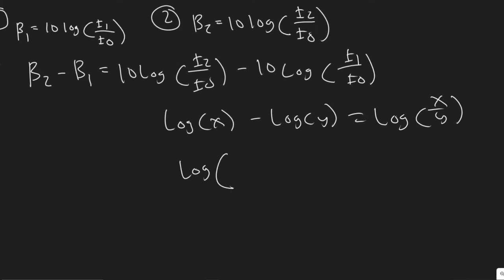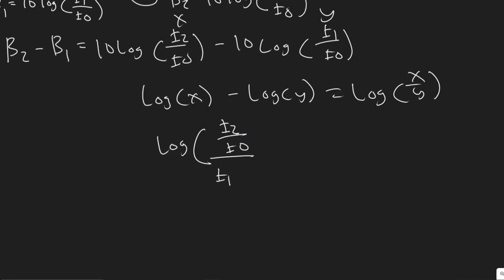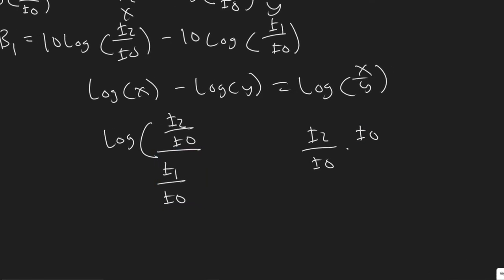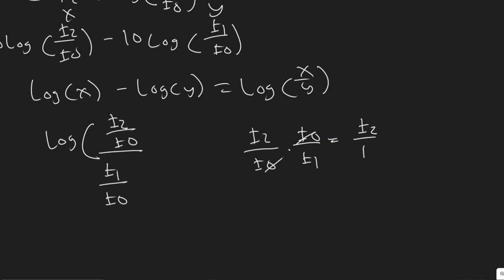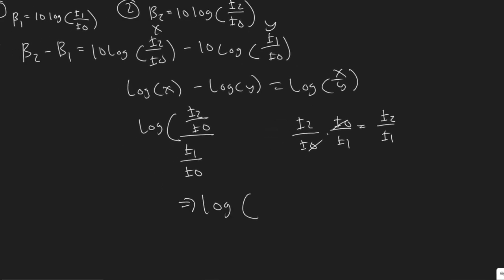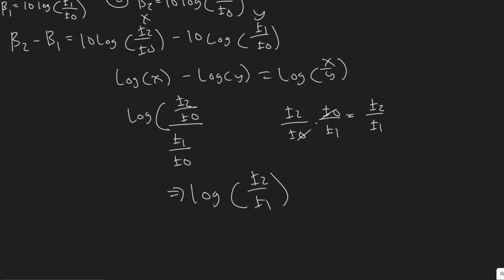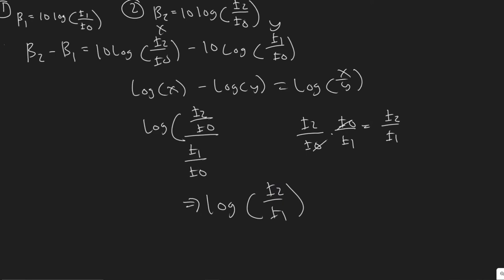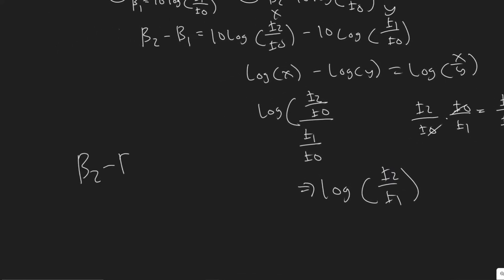So treating I₂/I₀ as X and I₁/I₀ as Y, you divide X by Y — which means I₂/I₀ multiplied by I₀/I₁. Notice the I₀ terms cancel, leaving just I₂ over I₁. So we can rewrite the whole thing as: beta two minus beta one equals 10 times the log of I₂ over I₁.